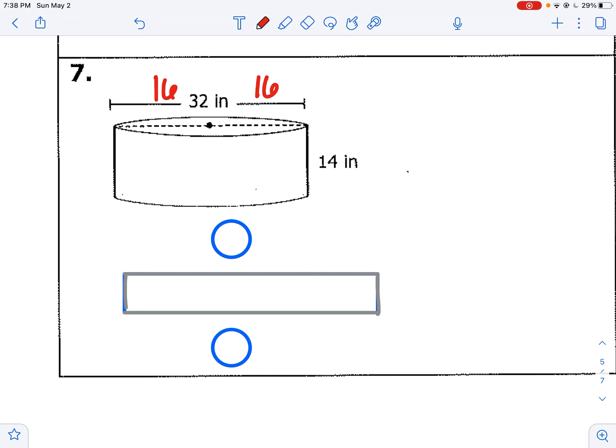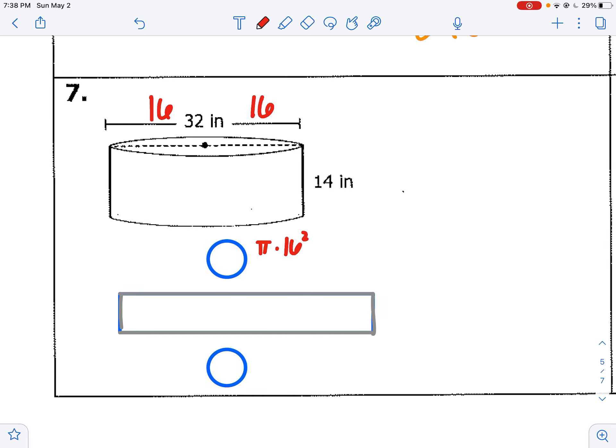So what we're going to do here is use pi r squared to find the area of each circle. So pi times 16 squared, which would give me 256 pi for the top and the bottom areas.